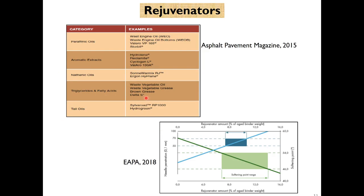There are several types of rejuvenators commercially available in the market. The Pavement magazine 2015 provides a few of them, and EAPA guidelines describe how to determine the amount of rejuvenator depending upon softening point range or penetration range. Both methods are available in the literature to determine the dose of the rejuvenator.